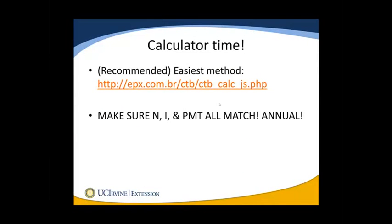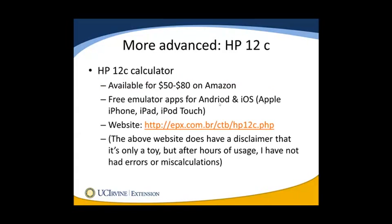On the slide you will see that I noted that N, I, and PMT must all match — they must all be within the same time frame, meaning annual. I will explain what this means in a minute. If you are advanced enough and you know how to use an HP-12C calculator or a TI-12B or any of the financial calculators, feel free to use those. However, teaching how to use those is a whole other lesson, so I am going to avoid that in order to make this as simple as possible for you, the student.